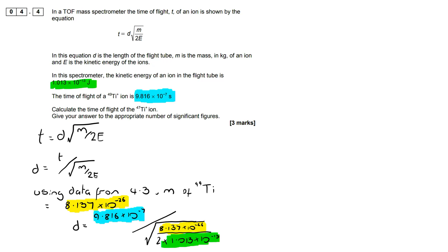Now what I have done here is highlighted the numbers so we can see where they come from. The time of flight we were told within the question—that's highlighted in turquoise. Then we're dividing by the root of m, which is what we worked out for titanium-49. Then we're dividing that by two times the kinetic energy of an ion, which was provided within the question and is highlighted in green.